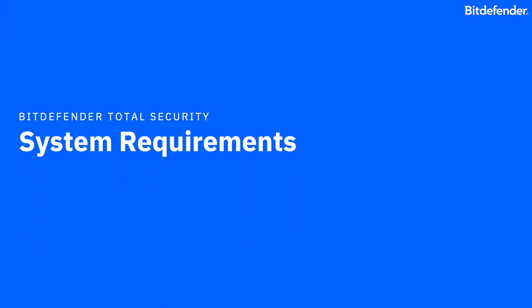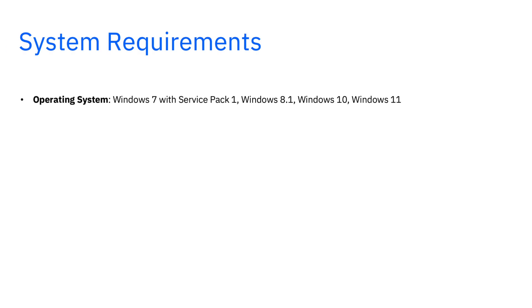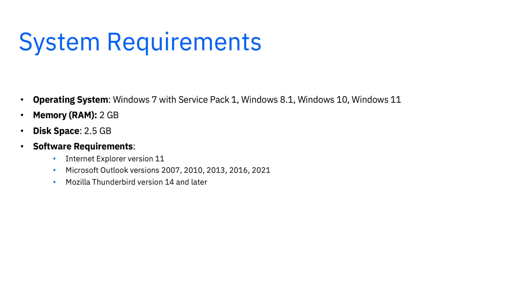System Requirements: Bitdefender Total Security runs on Windows 7 with Service Pack 1, Windows 8.1, Windows 10, and Windows 11. It requires at least 2GB of RAM and 2.5GB of free disk space. In addition, Internet Explorer version 11 is required, and the anti-spam feature only integrates with the Thunderbird and Outlook email clients.